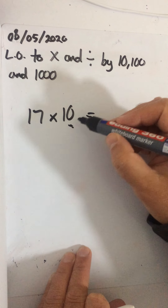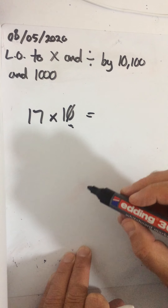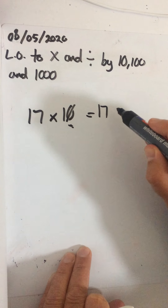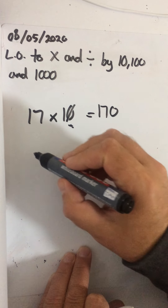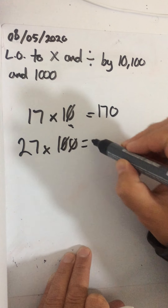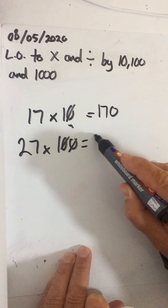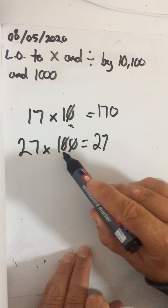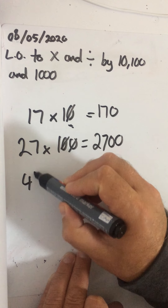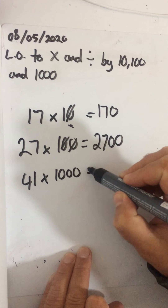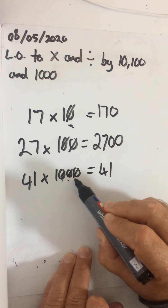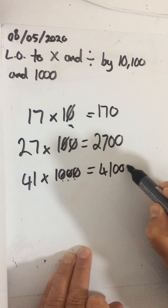There's one zero here. What I like to do is cross that zero off. 17 times 1 is 17. How many zeros have I crossed off? One. So I'm going to put another one on there. If I've got 27 times 100, I'm going to cross those zeros off. 27 times 1 is 27. I've crossed off two zeros, so I'm putting two zeros back on. I could have 41 times a thousand — cross those zeros off. 41 times 1 is 41. I've crossed 1, 2, 3 zeros off, so I'll put three zeros back on.